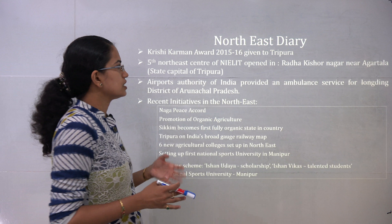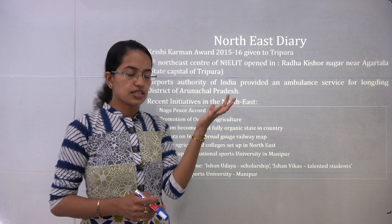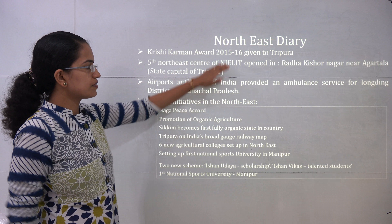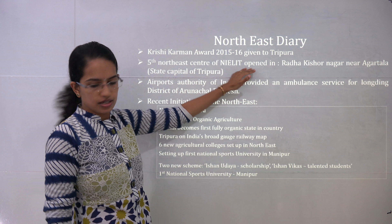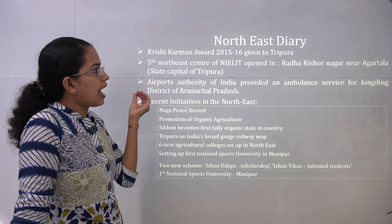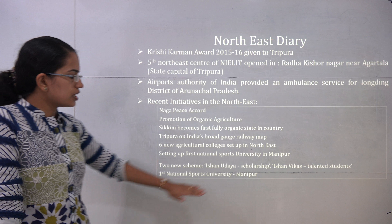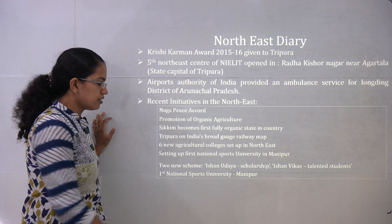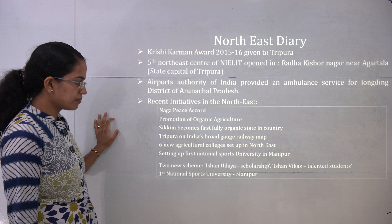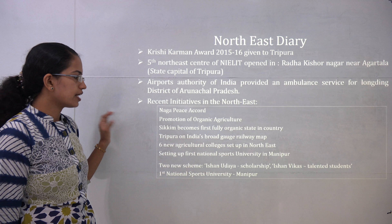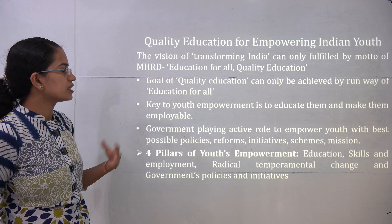North East is a very important sector given higher priority these days. The Krishi Karman Award for 2015-16 was given to Tripura. The 5th Northeast Centre of the National Institute for Electronics and IT was opened at Agartala. Airports Authority of India provides ambulance services for Arunachal Pradesh. Isha Uday is a scholarship scheme, and Ishaan Vikas provides fellowships. The first national sports university was set up in Manipur, 6 new agriculture colleges are being established, Tripura is being connected with broad gauge railway, and Sikkim is the first fully organic state.